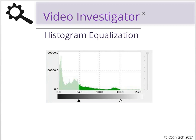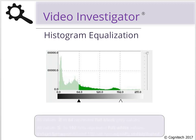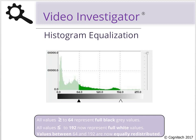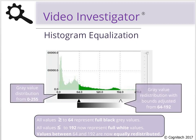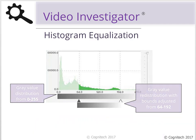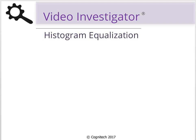Adjusting the bounds in a histogram redistributes the tonal values of each pixel. In this histogram, I've adjusted the bounds from 0–255 to 64–192. Now all the pixels with tonal values less than or equal to 64 will represent a fully black tonal value, and the pixels with tonal values greater than or equal to 192 will represent a fully white tonal value. The tonal values between 64 and 192 will now be evenly redistributed.